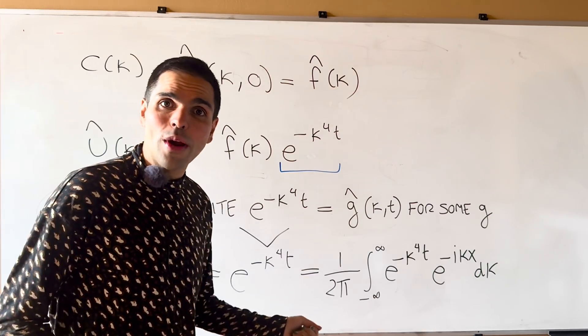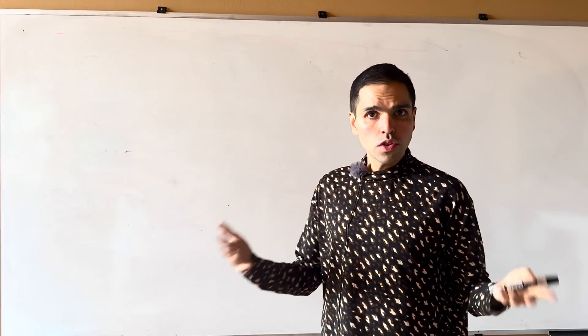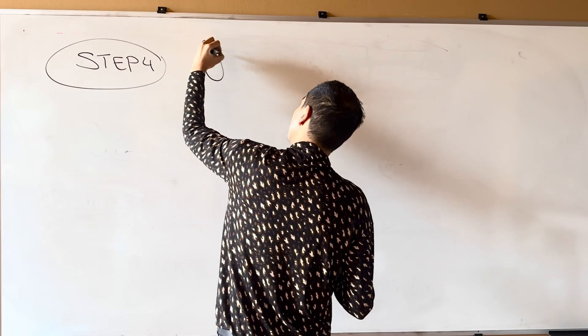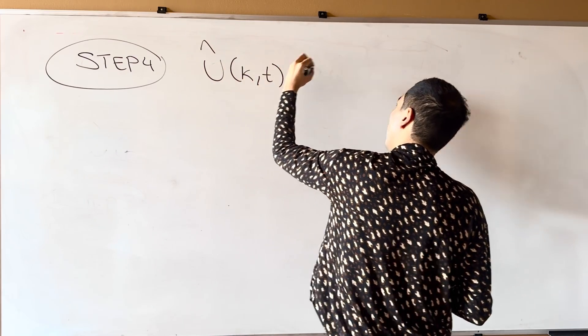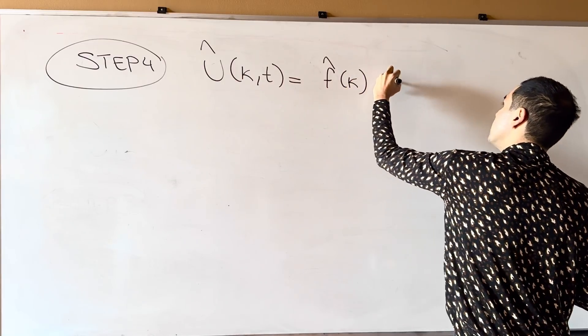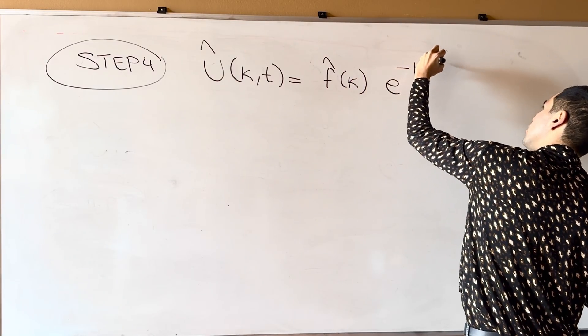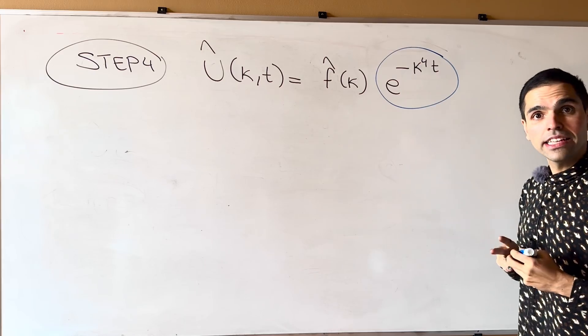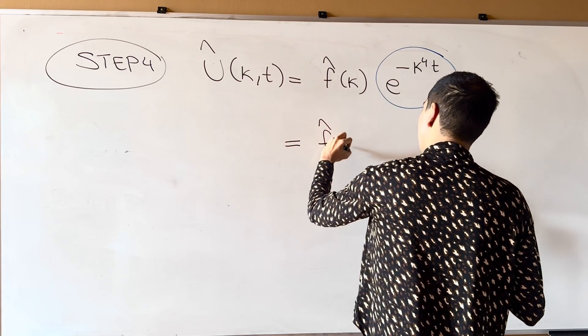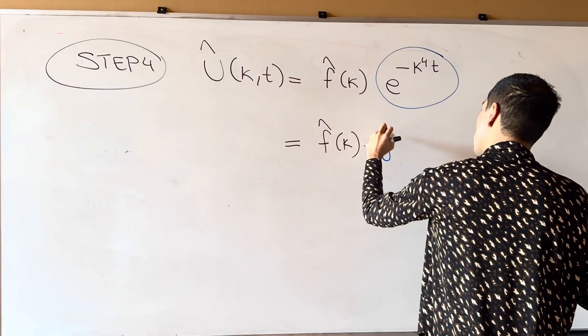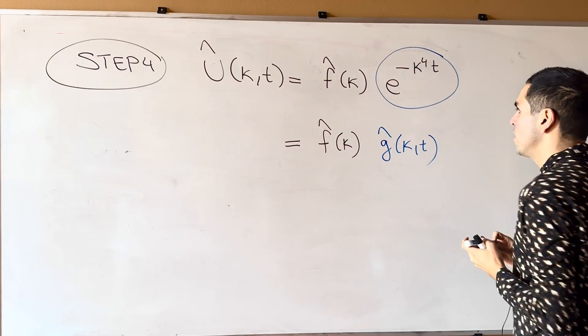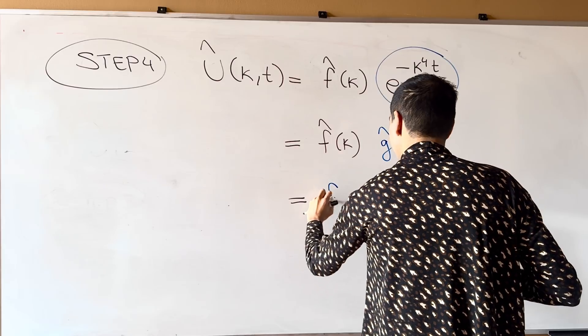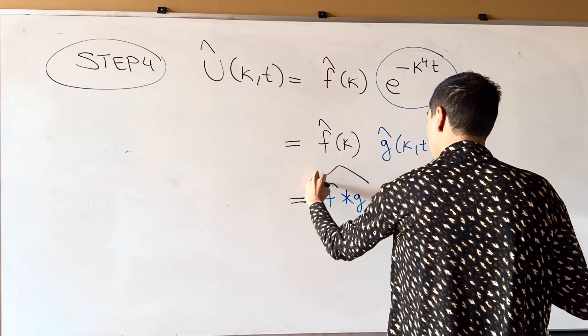And the cool thing is, the rest is just as usual, so kind of a grand finale. Step 4. What did we have so far? U hat kappa T was F hat kappa times E of minus kappa to the fourth T. And what we did in the previous step is to write this as a Fourier transform, so F hat of kappa G hat of kappa T. And now to combine those two, you just have to use convolution. So this is the same thing as F star G hat kappa T.